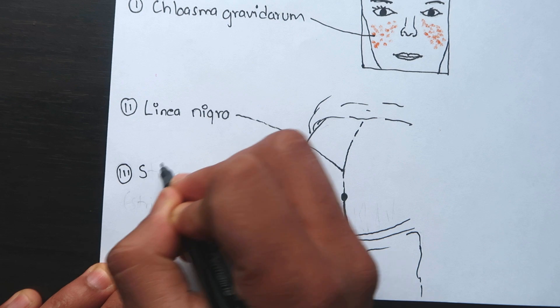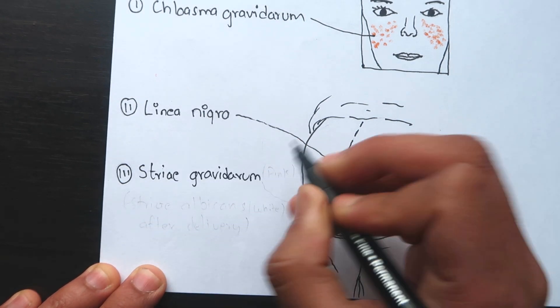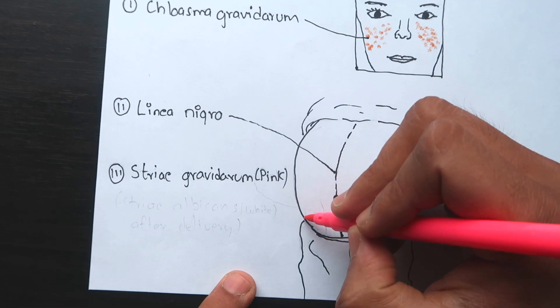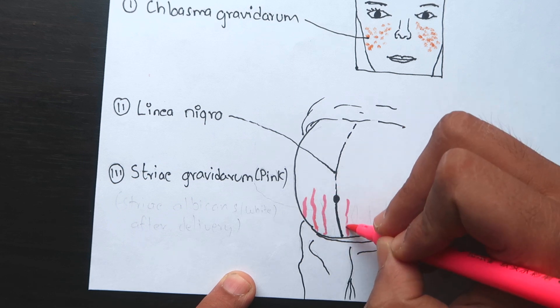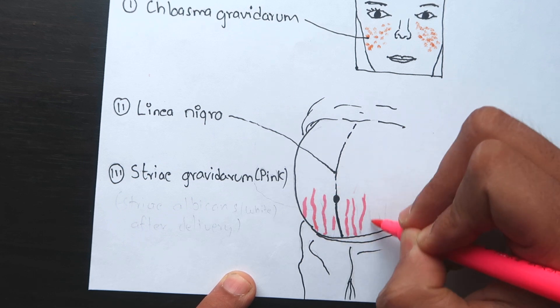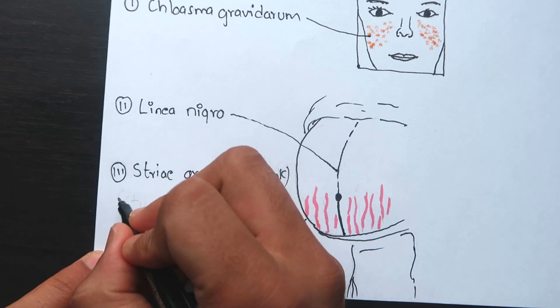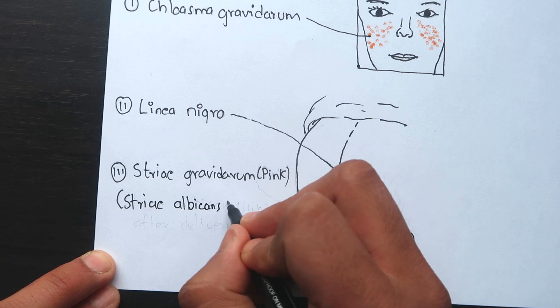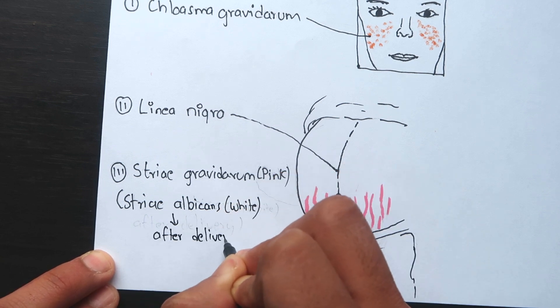Striae gravidarum are slightly depressed linear marks with varying lengths and breadth found in pregnancy. They are predominantly found in the abdominal wall below the umbilicus, sometimes over the thighs and breasts. Initially these are pinkish but after delivery, the scar tissue contracts and obliterates the capillaries and they become glistening white in appearance and are called striae albicans.